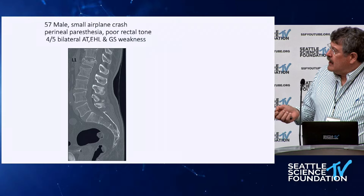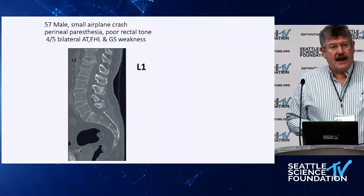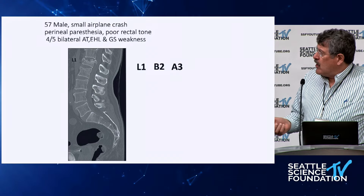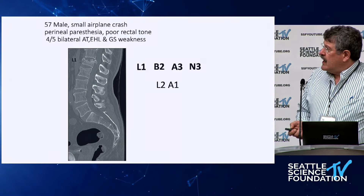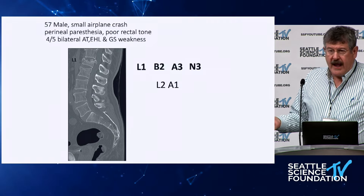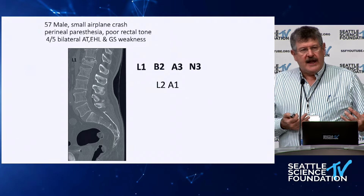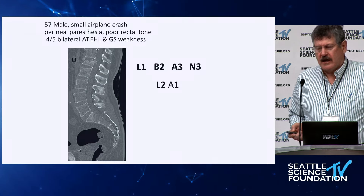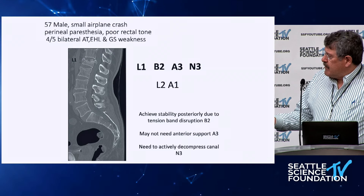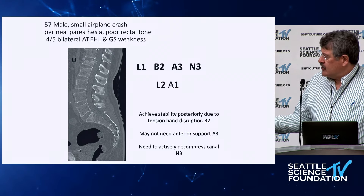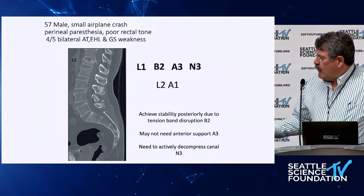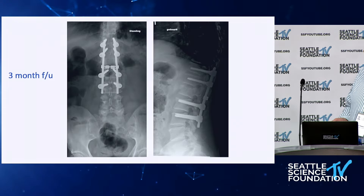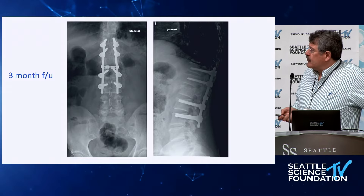Coming back to our case to finish up: the 57-year-old male with weakness at the L1 level. It's probably a B2 because of the facet fractures and disruption there. It has an A3 component — superior end-plate burst. The neurological injury is N3 because it's a conus-level injury. At L2 there's also an A1 fracture — simple compression. If you understand that classification — B2-A3, N3, with an L2 A1 — you'd have an exact vision of what that fracture looks like and can decide treatment. We know we need posterior stabilization due to the B2; we may or may not need anterior column support given the A3; and we need decompression because of the neurological injury. This patient was treated with multilevel posterior fixation and a transpedicular decompression.